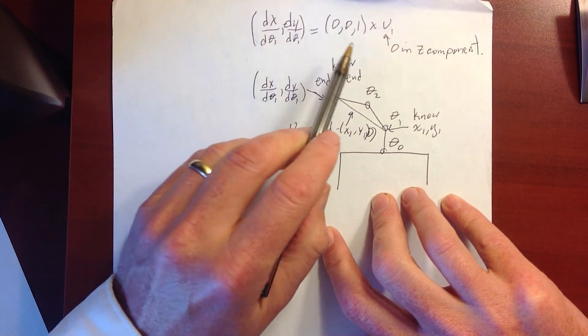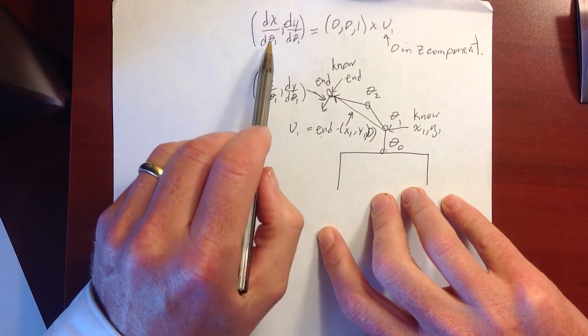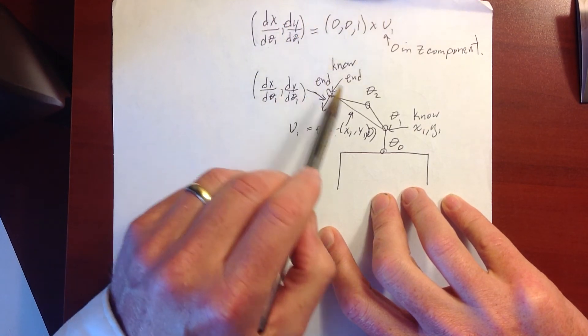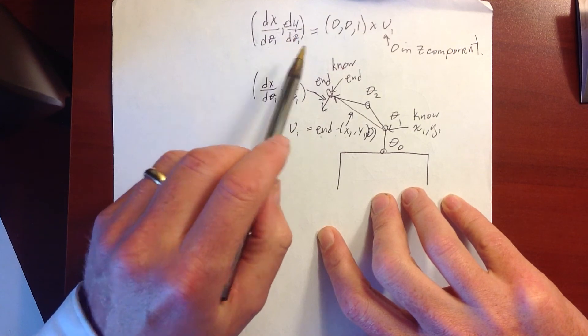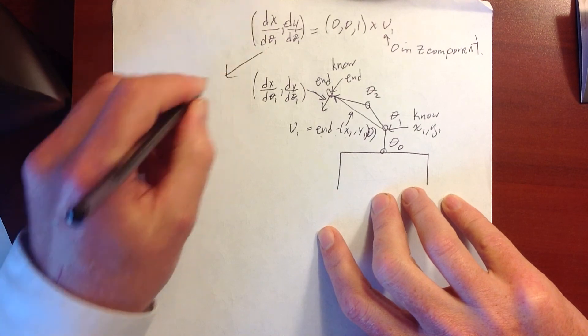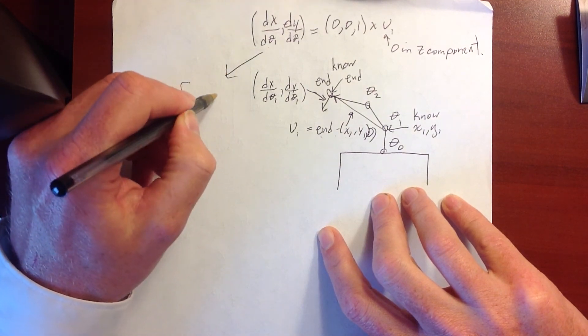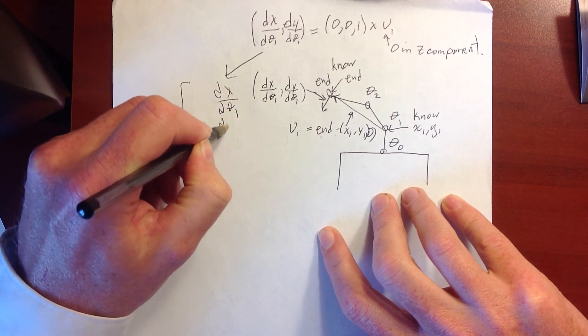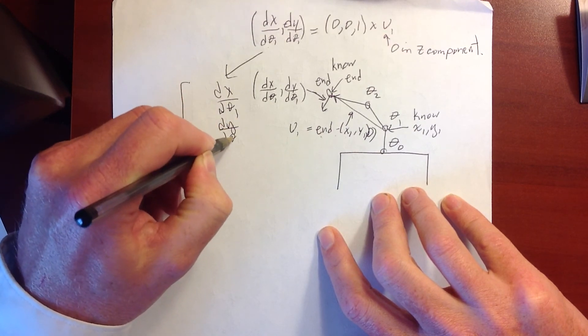So this cross product right here will give me dx d theta1, dy d theta1, comma 0, because it will also tell me that there's no change in the z direction. And then these are the values that I'll put back in the matrix. Notice that when I put these in the Jacobian, it's going to be dx d theta1, dy d theta1. So they're actually going to go in this order right here.